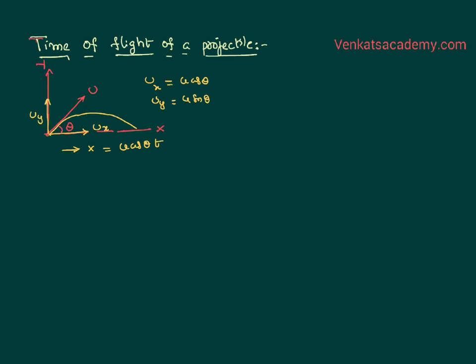uy is nothing but equal to u sin theta. I have further applied s equal to ut plus half a t square equation. And I have also proved y equal to displacement along y-direction: u sin theta into t minus half gt square.